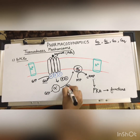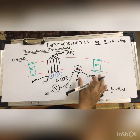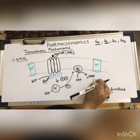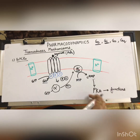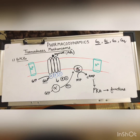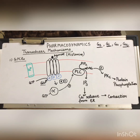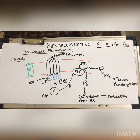Opposite effects are observed in the case of Gi proteins, which cause cyclic AMP inhibition. They inhibit adenylyl cyclase, resulting in no formation of cyclic AMP, and all the functions that were to be produced are inhibited.